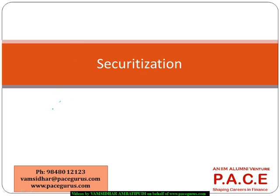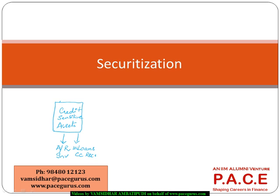As we have initially defined, whenever we use the word securitization, it is like a company will have some credit sensitive assets. Credit sensitive assets means there is some amount of uncertainty in terms of receiving them or in terms of getting their full value. So it could be as simple as some current assets like accounts receivables or inventories, or they could be long-term things like loans for a bank, housing loans, or credit card receivables.